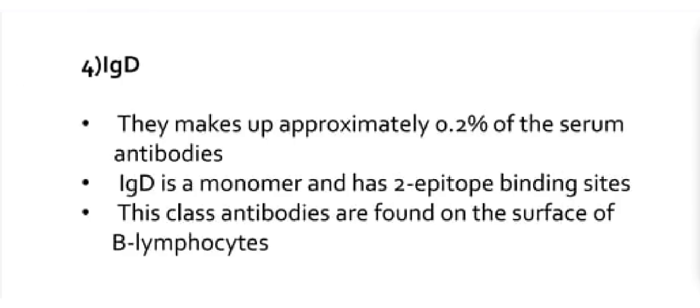Our next point is IgD. They make up approximately 0.2% of serum antibodies. It is a monomer and has 2 epitope binding sites. This class of antibodies are found on the surface of B lymphocytes.